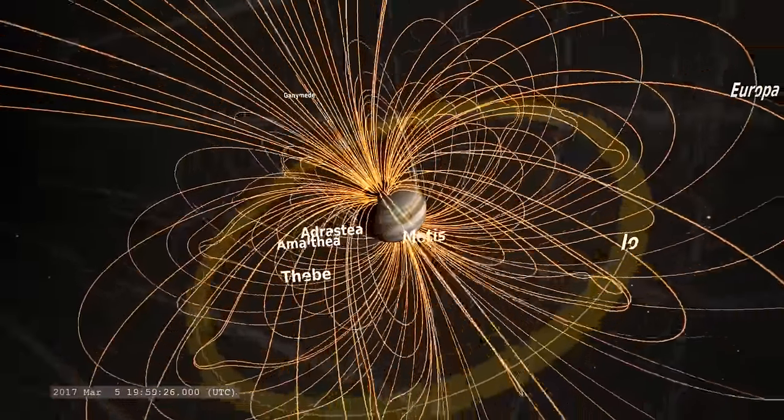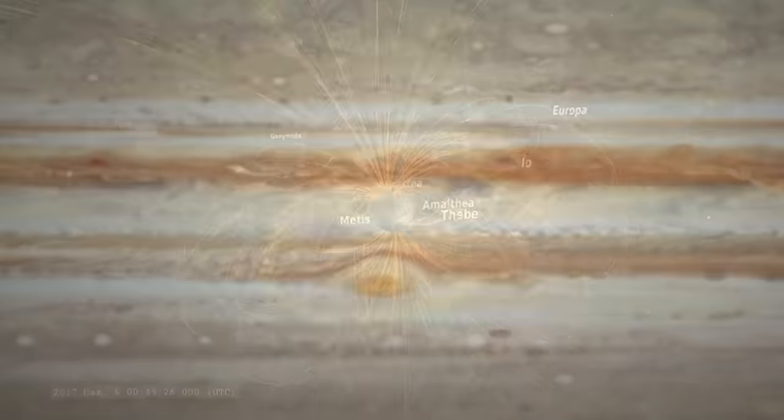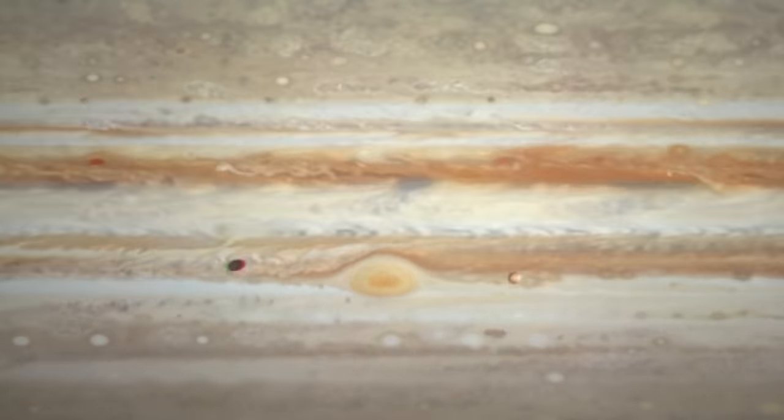So in simple terms, the scientists think that these wave-like movements in Jupiter's magnetic field are causing the changes in the stripes on the planet. Pieces of a puzzle are coming together.